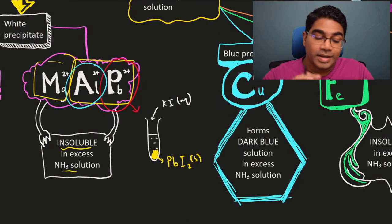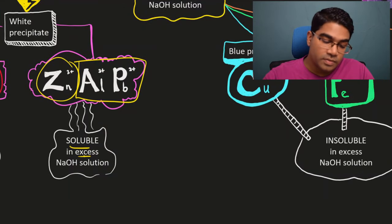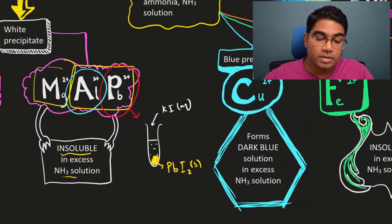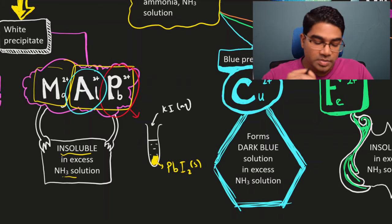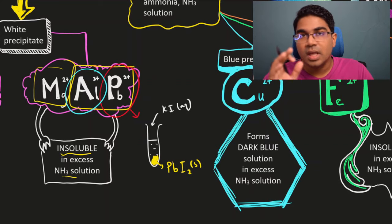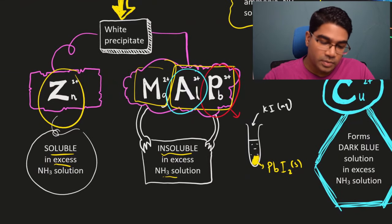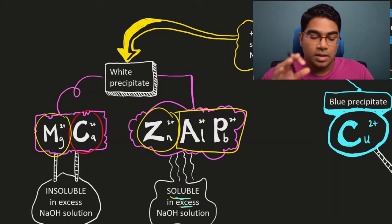So for lead and aluminium: if you get soluble in excess when you add sodium hydroxide solution, and insoluble in excess with ammonia solution, then you need to test with potassium iodide. If a yellow precipitate is formed then it is definitely lead(II) ion present in the sample. If there is no precipitate formed, then we know that it is aluminium ion. So now we have distinguished between all five possible choices in the white precipitate category.